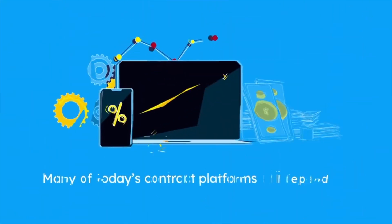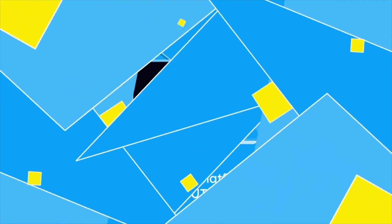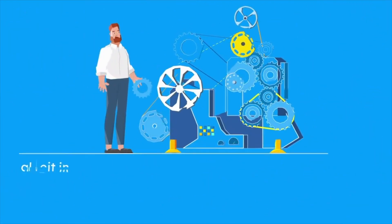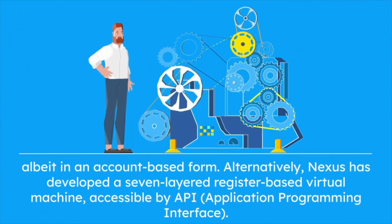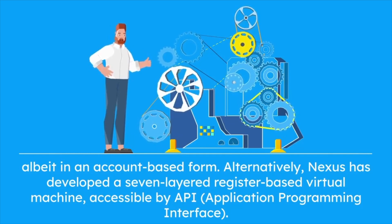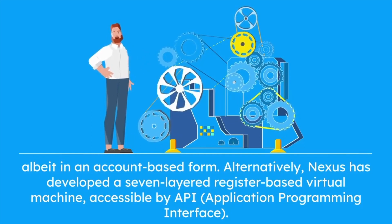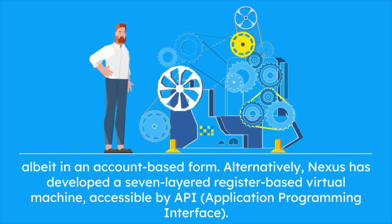Many of today's contract platforms still depend on Bitcoin's original UTXO architecture, albeit in an account-based form. Alternatively, Nexus has developed a seven-layered register-based virtual machine, accessible by API — application programming interface.